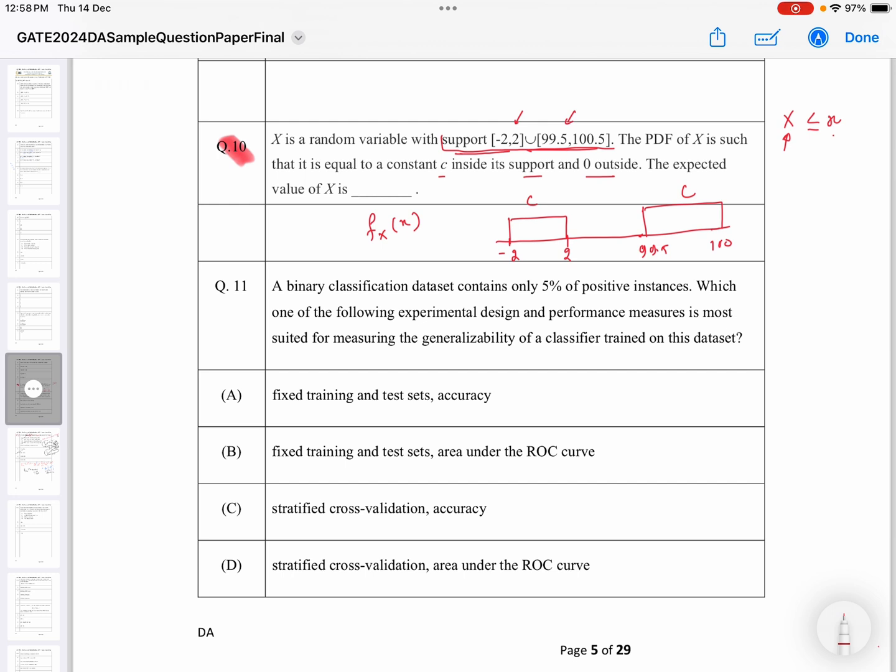Now we have to find the expected value of this X. First of all, we will have to find the value of C. Since you know the property of the PDF - that if you integrate throughout the complete PDF then it should be equal to 1 - we will have to just take the area of this PDF and we can find the value of C.